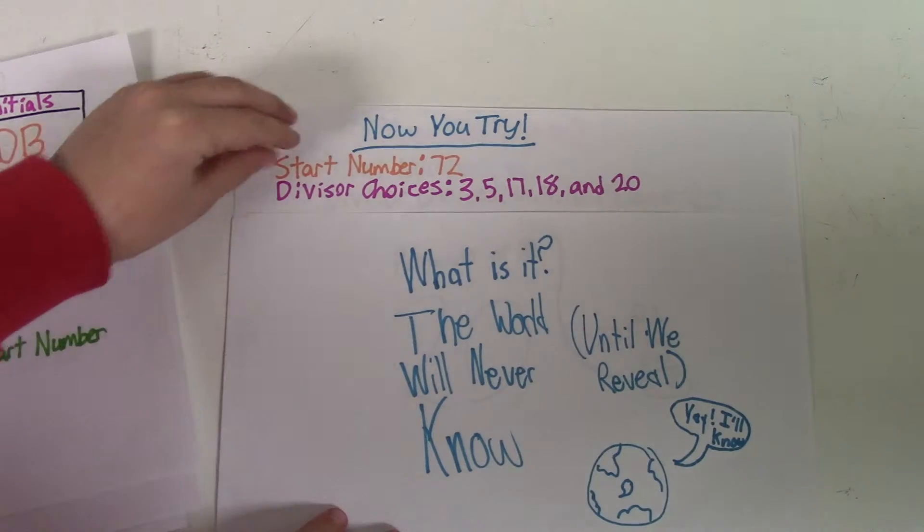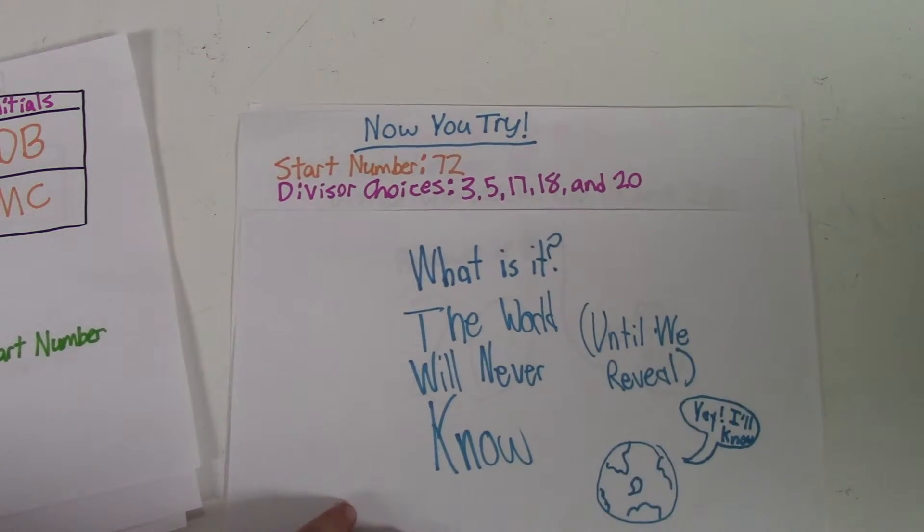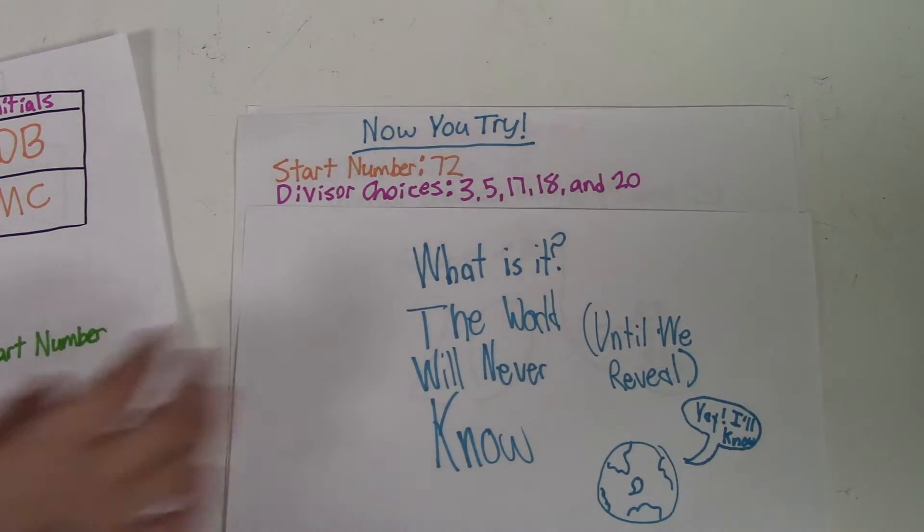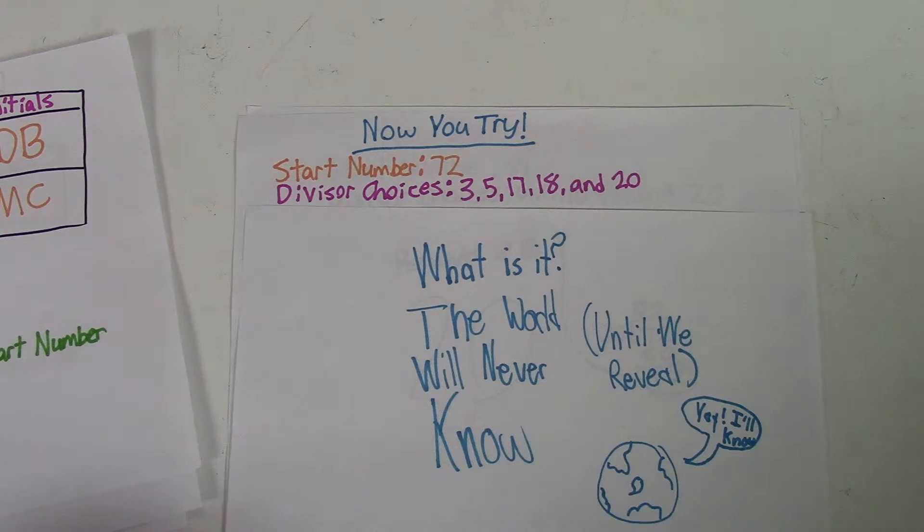Now we're going to let you guys try one on your own. So this start number is going to be 72. And you have the divisor choices 3, 5, 17, 18, and 20. Now you can pause the video right now and pick one that would get the highest remainder.